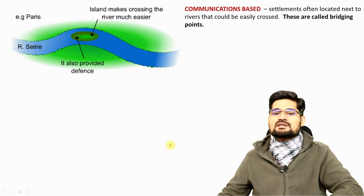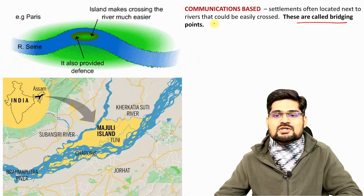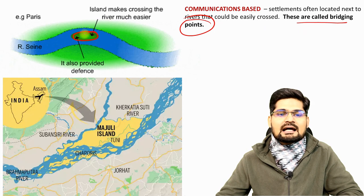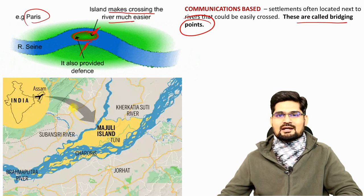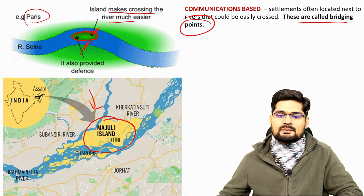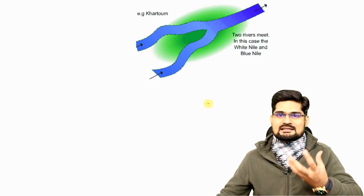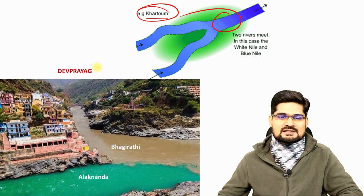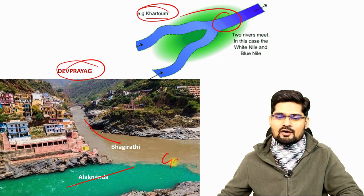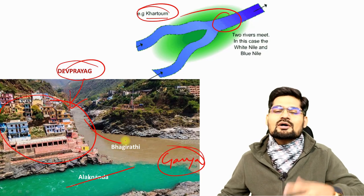Communication-based settlements include bridge point settlements. Riverine islands make crossing rivers easier; Paris has such islands. In India, the best example is Majuli Island — the biggest riverine island in the Brahmaputra in Assam. Confluence settlements are located at the meeting of two rivers; Khartoum is one example. In India, the most famous is Dev Prayag, where the Bhagirathi and Alaknanda rivers meet to form the Ganga.